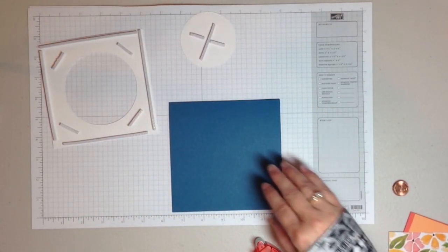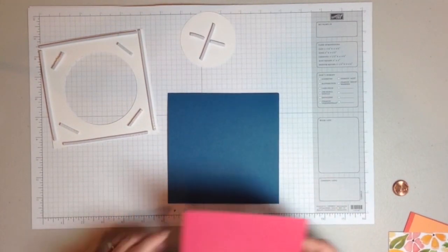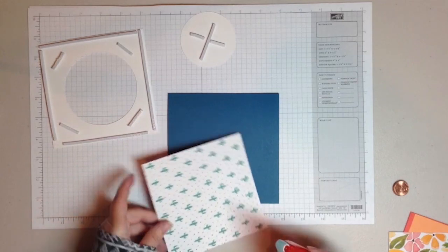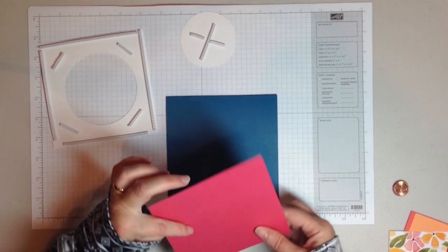Next, take your cardstock base. Just double-checking to make sure I have that the right direction. I made a card the other day where I had that upside down. And take the contrasting piece of DSP, apply adhesive and center that.